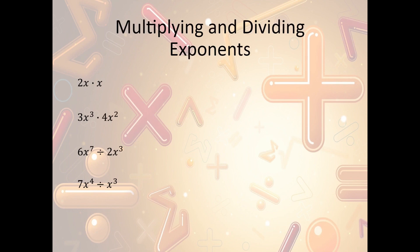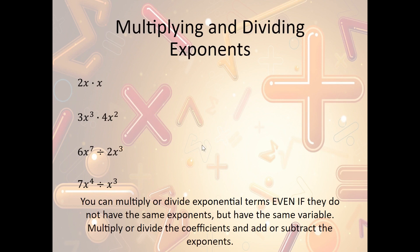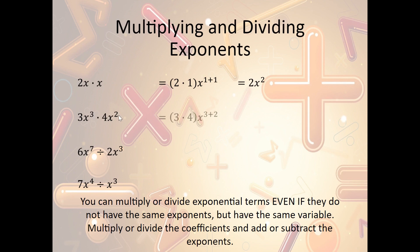Now when we multiply or divide exponents, the rule is: when we multiply or divide exponential terms, even if they do not have the same exponents but have the same variable, we can still do it. We multiply or divide the coefficients and add or subtract the exponents. So for multiplication, we add the exponents. For example, 2x times x: coefficients are 2 times 1, and exponents are x¹ plus x¹, giving us 2x². Another example: 3x³ times 4x² — we multiply 3 times 4 and add 3 plus 2, giving us 12x⁵.